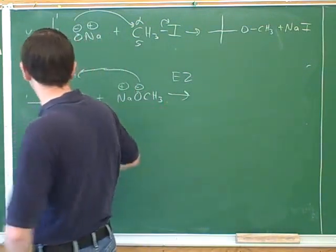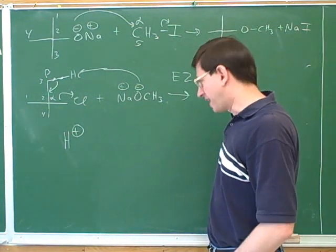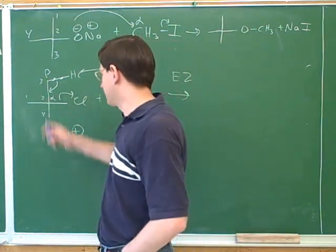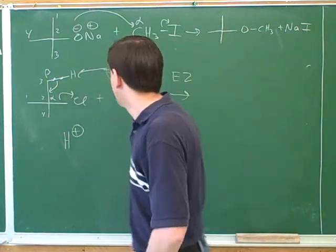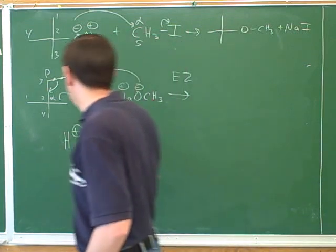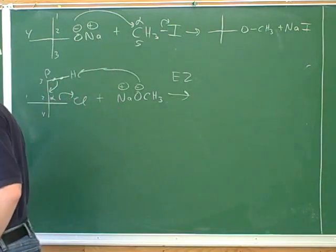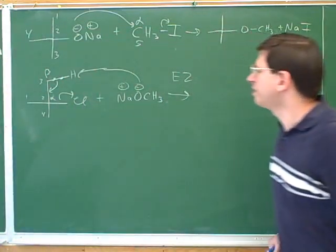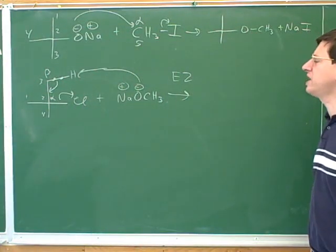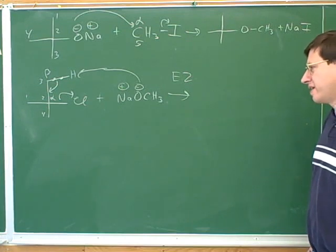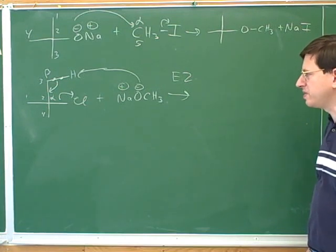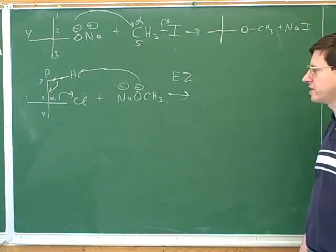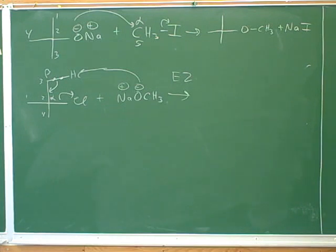However, that means we have to make room for those new electrons on the number two carbon. We can do that by having the leaving group leave. That's why this was called the alpha carbon in the first place — because it has the leaving group. Now that we've drawn all the arrows, remember that we should definitely be able to draw the products. Once you have the arrows, it should be easy to draw the products as long as we take our time.